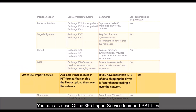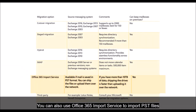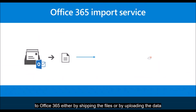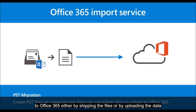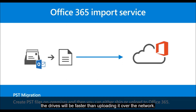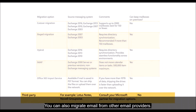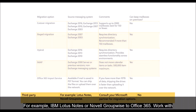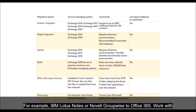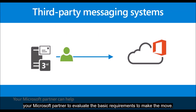You can also use Office 365 Import Service to import PST files to Office 365, either by shipping the files or by uploading the data over the network. If you have more than 10 terabytes of data, shipping the drives will be faster than uploading over the network. You can also migrate email from other email providers, for example IBM Lotus Notes or Novell GroupWise, to Office 365.